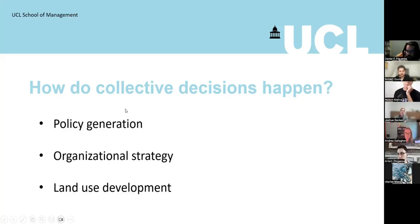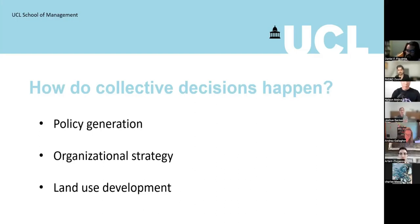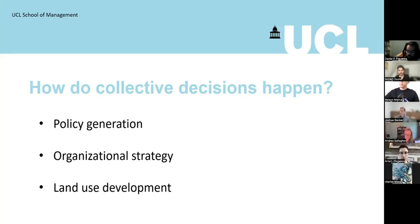I'm particularly interested in how collective decisions happen. Examples include policy generation — especially wicked problems that are technically difficult but also have to satisfy competing stakeholders with various needs. Things like climate policy or designing a sustainable healthcare system are simultaneously technical challenges and problems where people simply have different priorities. I'm also interested in organizational strategy — whether it's a top-down hierarchical firm or something like a DAO — and things like land use development. I once did a mediation focused around an empty corner lot in Baltimore.